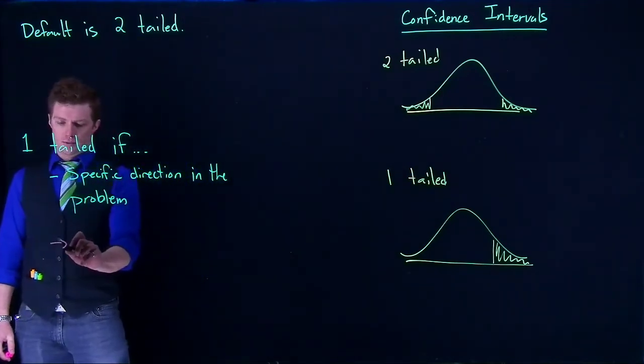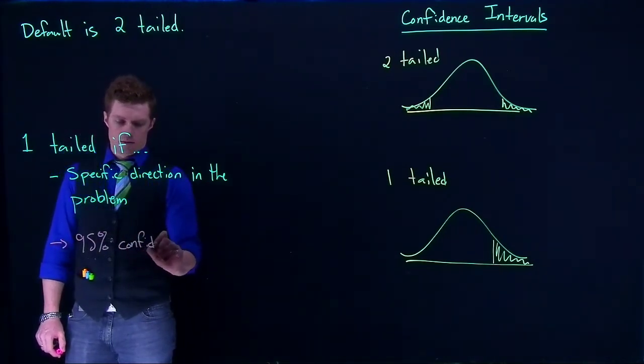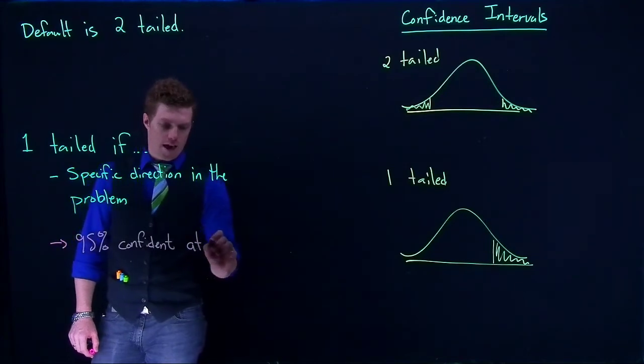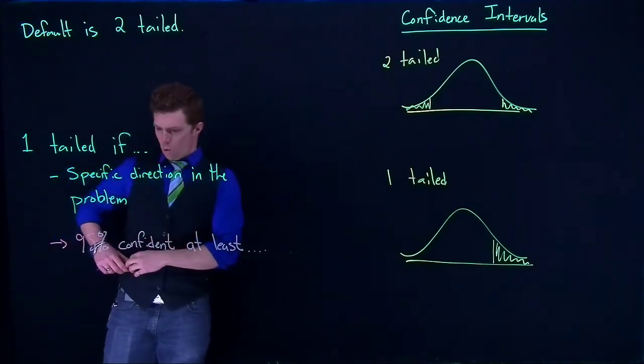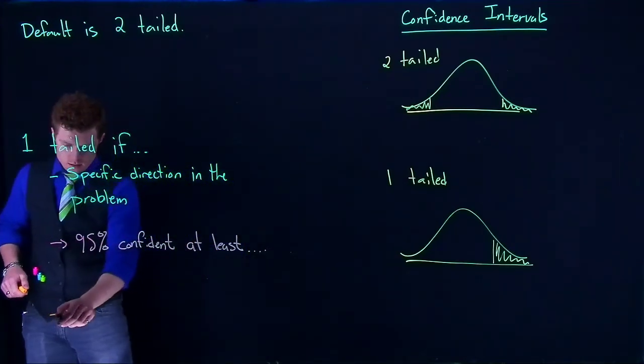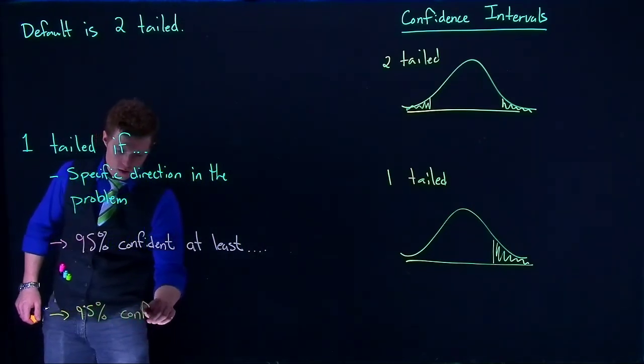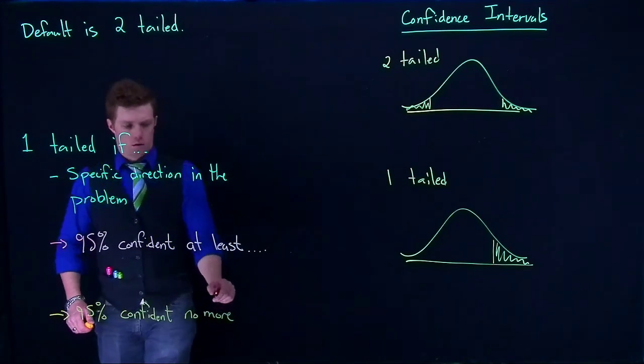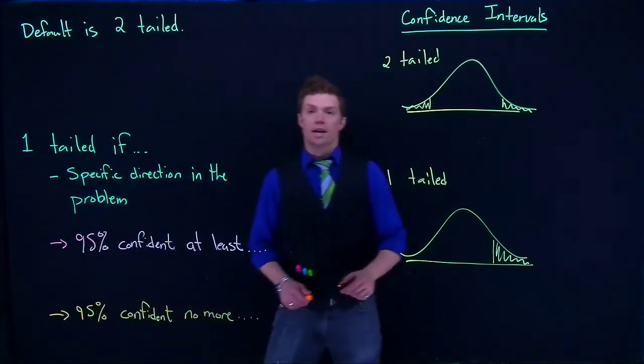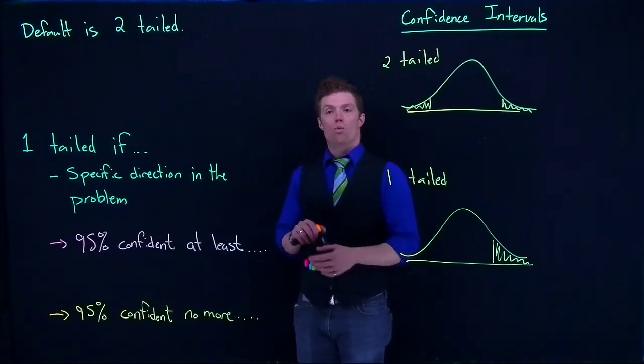So if we see something like 95% confident at least, or we could do something like 95% confident no more, those are good indicators that we are instead looking for a one-tailed interval. And it takes a little bit of time and just practice of getting used to when we want one versus the other.